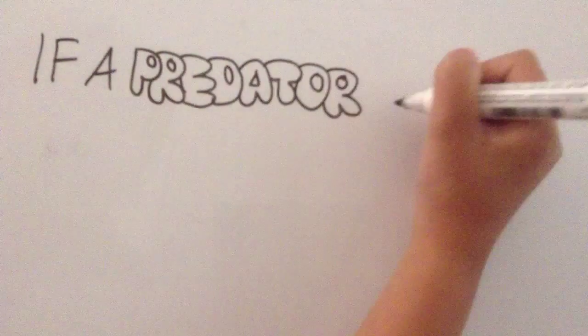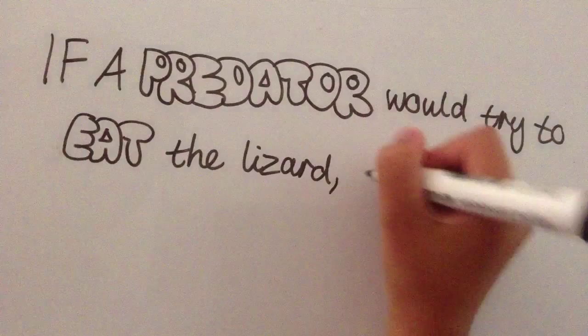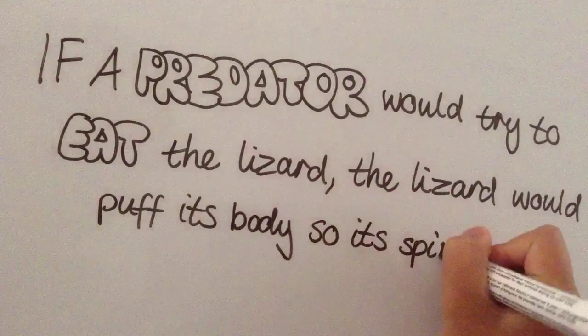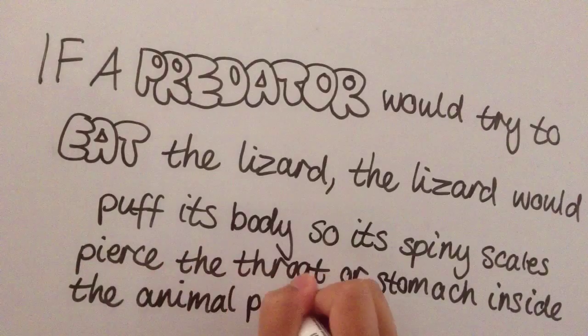If a predator would try to eat the lizard, the lizard would puff its body so its spiny scales would pierce the throat or stomach inside the animal predator.